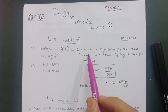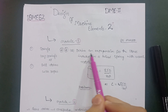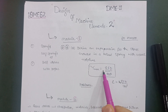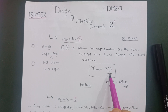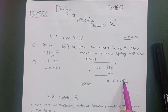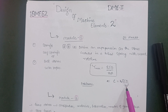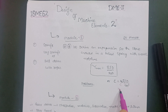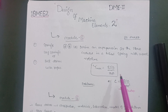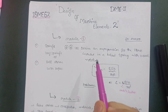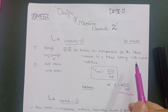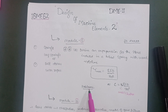In Module 1, there is one definite question: derive an expression for the stress induced in a helical spring with usual notation. The equation is τ_max = K_w × (8FD) / (πd³), where K_w is the Wahl's factor. This is a definite question for the exam, so just memorize this equation and you will easily get 10 marks on this question.